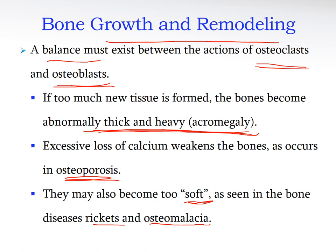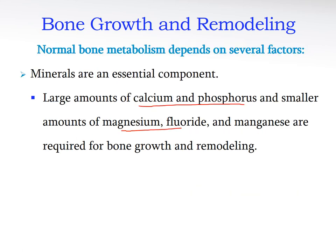Pathologically, bones can become abnormally thick and heavier — that disease is called acromegaly, which we will study in the endocrine system. In osteoporosis, bones get weaker due to lack of calcium and increased osteoclast activity. Rickets and osteomalacia are different — the bones become soft because the extracellular matrix is deficient in proteins and collagen, so calcification is inadequate. We'll return to these diseases when we cover the endocrine system.